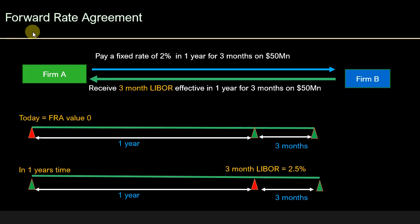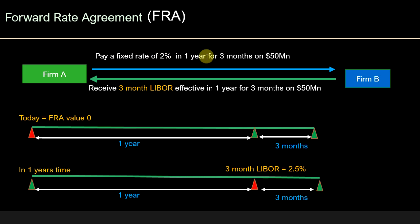Let's look at a simple example to understand the concept. Here we have Firm A entering into a contract with Firm B. Firm A has agreed to pay a fixed rate of interest of 2% in one year for a three-month period on a notional of 50 million US dollars. In exchange, Firm A will receive the three-month LIBOR interest rate effective in one year's time for a three-month period on the same notional of 50 million US dollars.